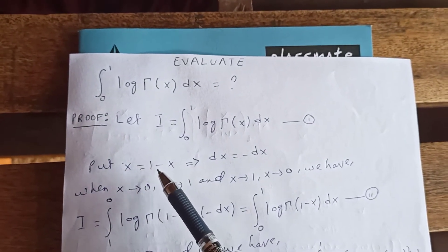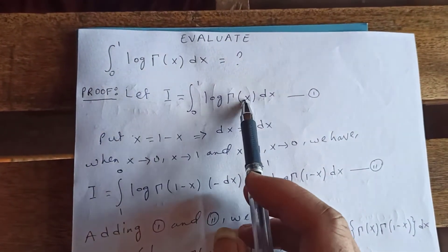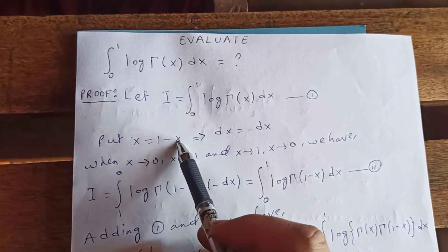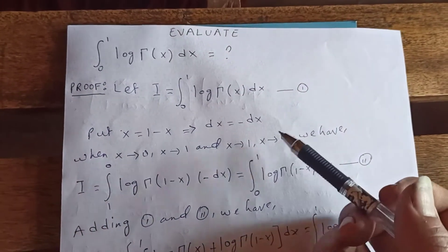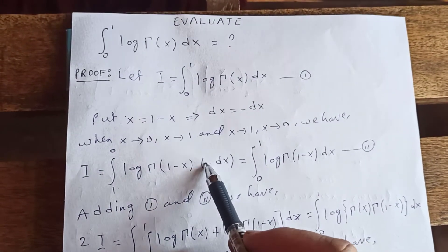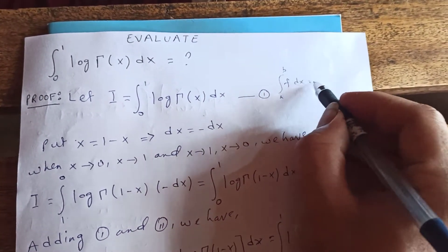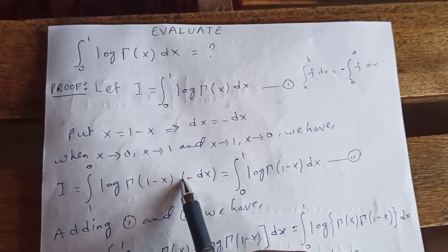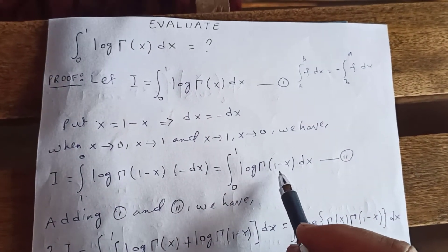Now if we substitute x equal to 1 minus x, then dx equals negative dx. When x tends to 0 (the original), the substitution variable tends to 1, and when x tends to 1, the substitution tends to 0. So I becomes the integral from 1 to 0 of log(Γ(1 minus x)) times negative dx. Due to this negative, we can interchange the upper and lower limits, giving us the integral from 0 to 1 of log(Γ(1 minus x)) dx — call this equation 2.